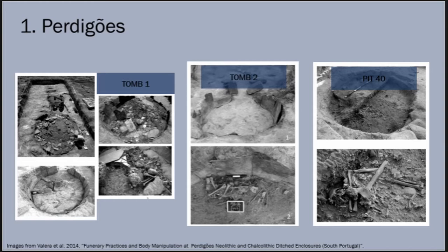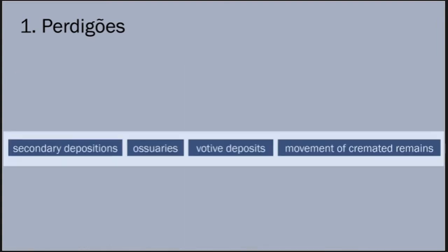Cremated human remains were also placed in Pits 16 and 40. Analyses of skeletal remains from these pits have shown that cremations of complete bodies likely took place elsewhere, and all resultant remains were then carefully collected and transported to these pits. To summarize, at Perdigoix we have mortuary practices that incorporate secondary depositions, ossuaries, votive deposits, and the movement and redeposition of cremated remains.